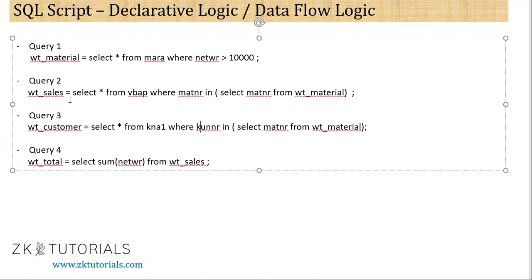Yet they are dependent on query 1. But after query 1, these two queries can run parallely. Hence, query 1 runs first, and once it's finished, query 2 and query 3 can run in parallel. I hope this is clear. Which means HANA can process one branch by one core and another branch by another core.